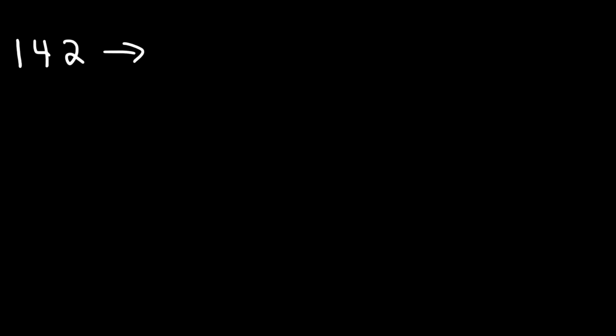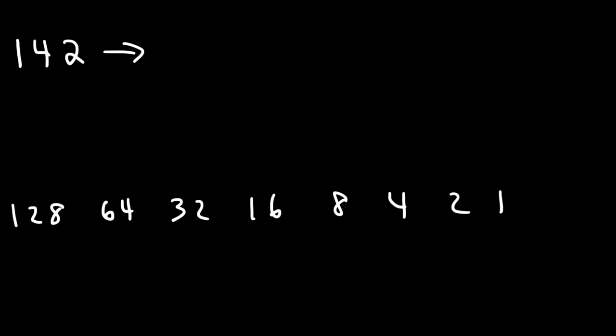Here's another example. Let's say we have the number 142. Let's convert that into a binary number. So let's write the list of numbers that we're going to work with: 128, 64, 32, 16, 8, 4, 2, and 1. So the highest base 2 number under 142 is 128. So let's start with that.